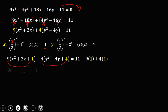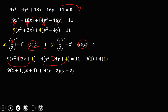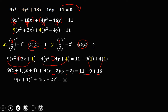Now factor each group. For x: x² factors as x·x and 1 factors as 1·1. Since the middle term is positive, all signs are positive, giving (x + 1)². For y: y² factors as y·y and 4 factors as 2·2. Since the middle term is negative, all signs are negative, giving (y - 2)². On the right side, simplify: 11 + 9 + 16 = 36.